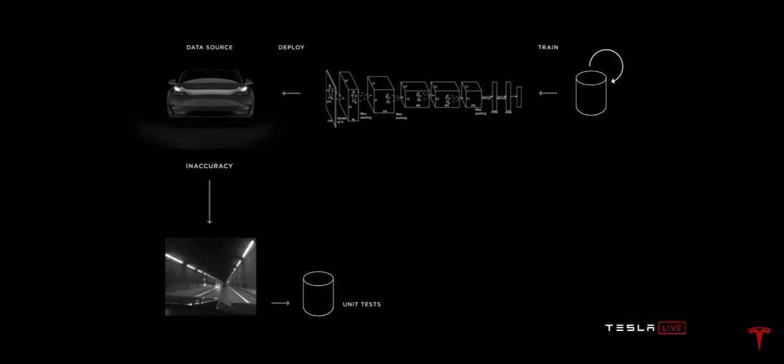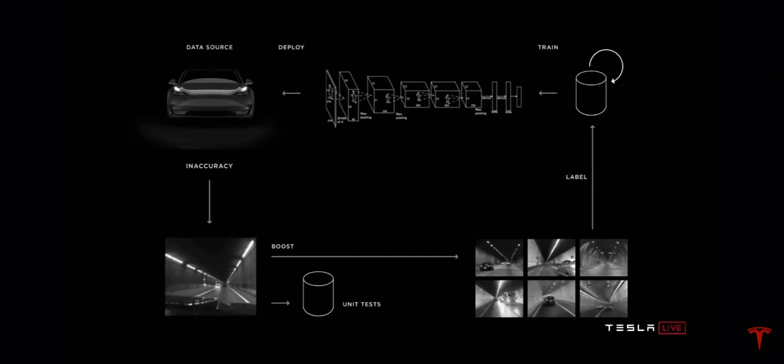For example, if we don't perform very well on lane line detection in tunnels, we can notice that there's a problem in tunnels. That image would enter our unit tests so we can verify that we're actually fixing the problem over time. To fix this inaccuracy, we source many more examples that look like that — we ask the fleet to send us many more tunnels, label all those tunnels correctly, incorporate that into the training set, retrain the network, redeploy, and iterate the cycle over and over again.